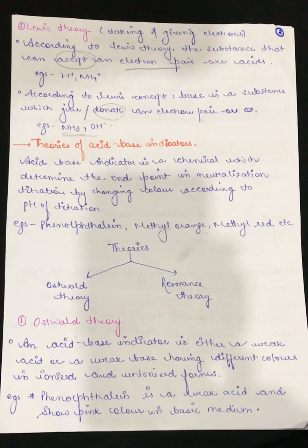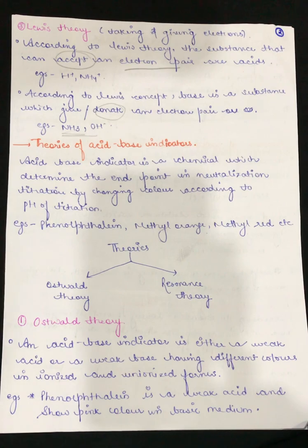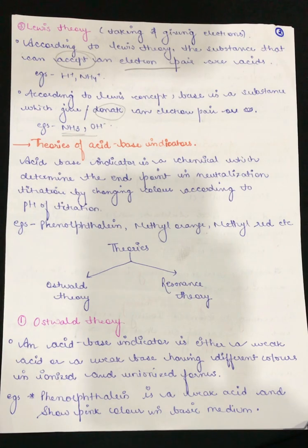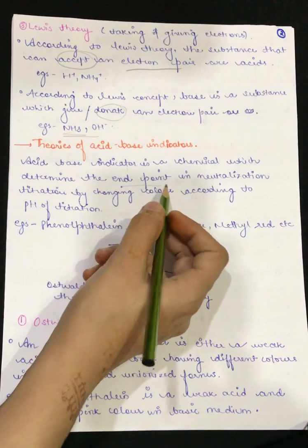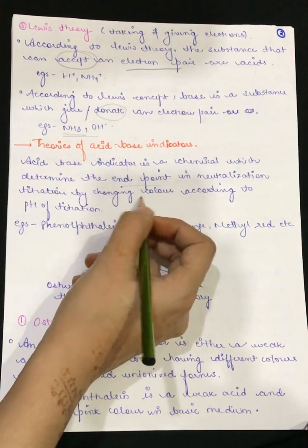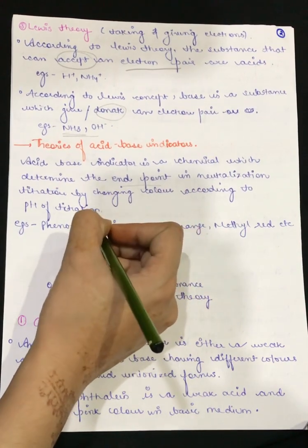Now let's see what are the theories of acid-base indicators. Whenever we perform an acid-base titration, we always use an indicator. An acid-base indicator is a chemical which determines the end point in neutralization titration by changing color according to the pH of the titration.